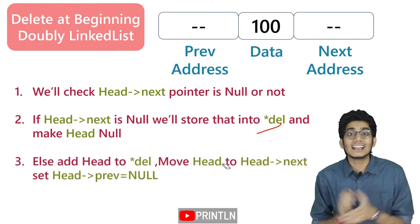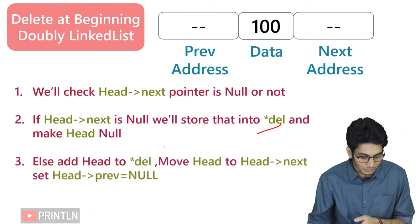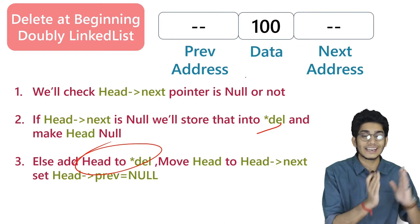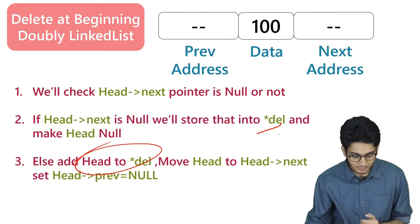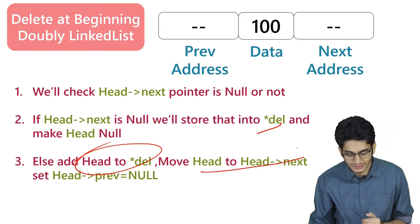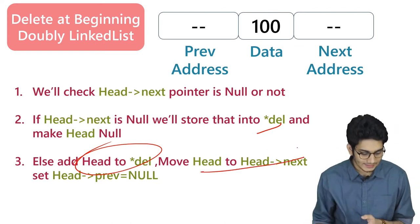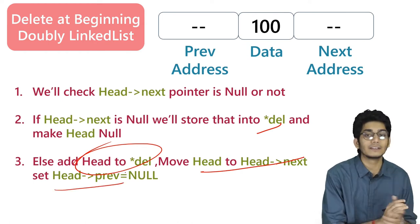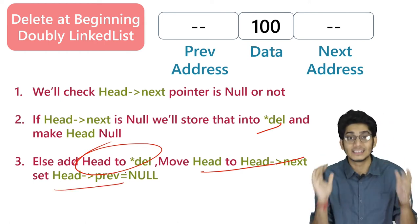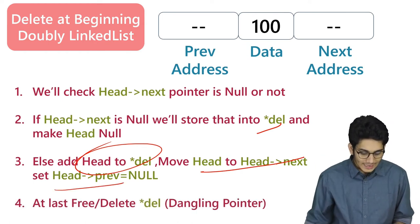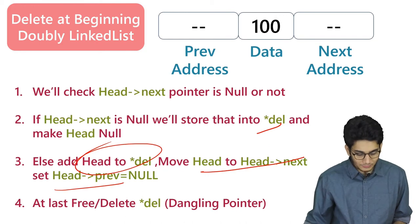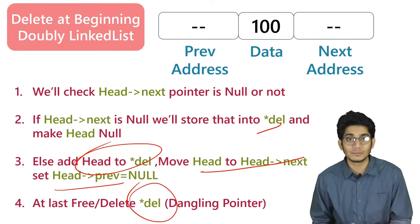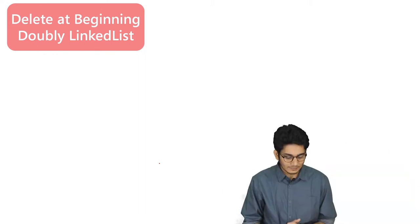In the else condition, we store head into del for deallocating memory, then move head to head next, then set head prev as null. Finally, we delete del — otherwise it will be a dangling pointer. Let's look at a diagram.